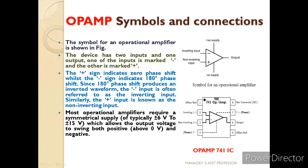The μA741 is an eight-pin configuration as shown in this figure. A notch or dot present on the IC helps us to identify the pin numbers. Starting from the left-hand side of the notch, the pins go 1, 2, 3, 4, 5, 6, 7, 8. Pins 2 and 3 are connected to the inverting and non-inverting terminals, pins 7 and 4 are connected to the positive and negative supply, and pin 6 is connected to the output. These are the symbol and connections of the operational amplifier.